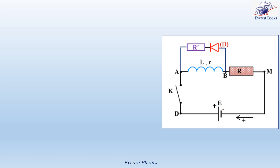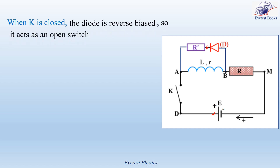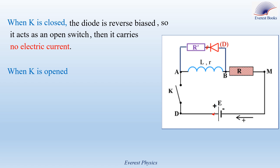Now let's explain how the circuit avoids the damage. When the circuit is closed, the cathode of the diode is connected to the positive terminal of the battery, so the diode is reverse biased and acts as an open switch, carrying no current. The current passes only through the circuit containing the battery, the switch, the coil, and the resistor R. When the switch K is opened, the current in the coil decreases to zero during the transient phase, the coil acts as a generator, and the anode of the diode is now connected to the positive pole of this generator, so the diode is forward biased.